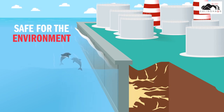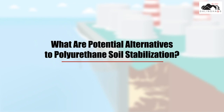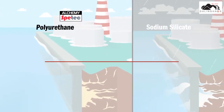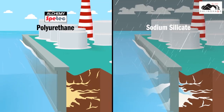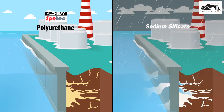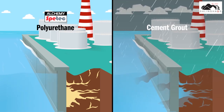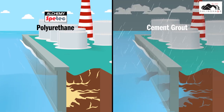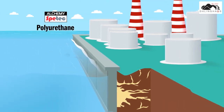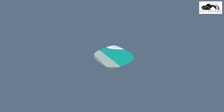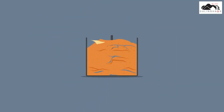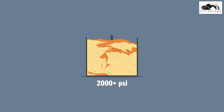These products have been tested and certified to meet the requirements of NSF/ANSI 61 and are certified safe for contact with drinking water. What are potential alternatives to polyurethane soil stabilization? There's sodium silicate, but wet and dry cycles can break it down. There's cement grout, but it's heavy, it shrinks and cracks, and it doesn't permeate soil. Polyurethane, on the other hand, lasts forever when permeated into sand.